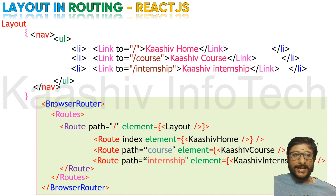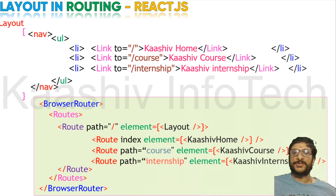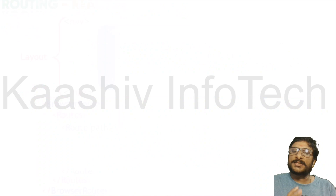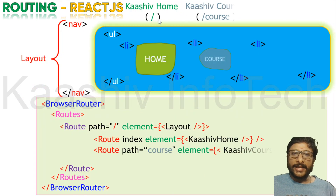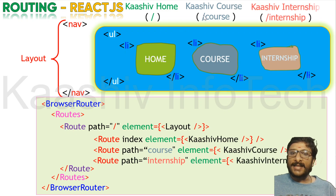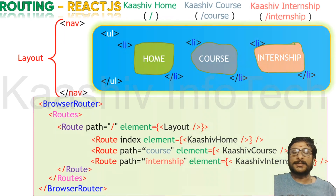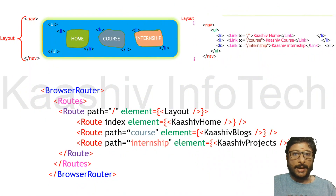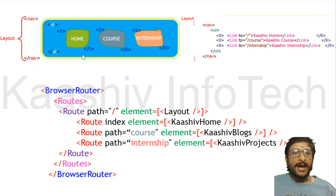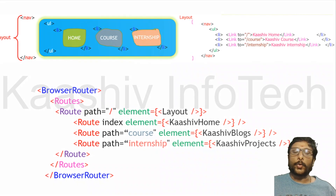The entire code is written as BrowserRouter, Routes, and Route components. Under that, you have your individual pages listed. This is how your layout and router works. You can see the index page slash, slash home, slash course for the course page, slash internship for the internship page. This is how the basic routing mechanism happens in ReactJS — this is the overall picture showing your layout page, index.js page, and all the pages linked together. That is called React Routing.